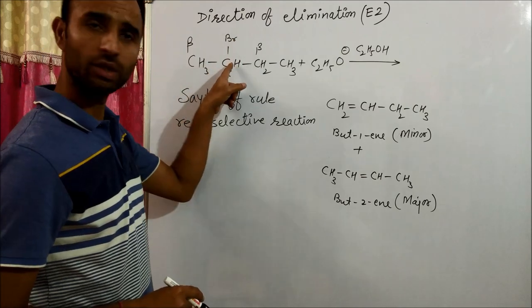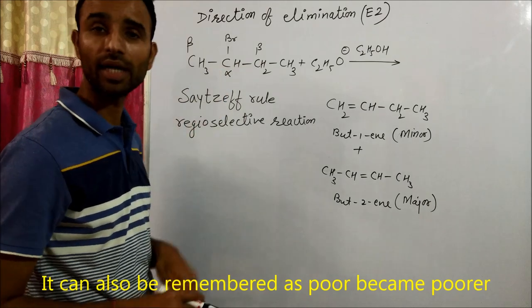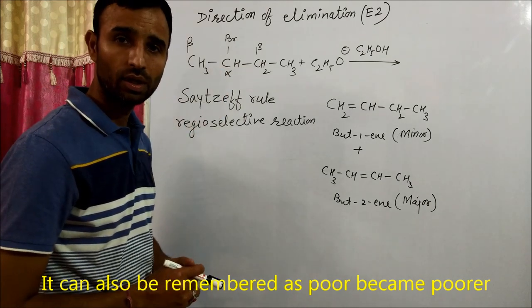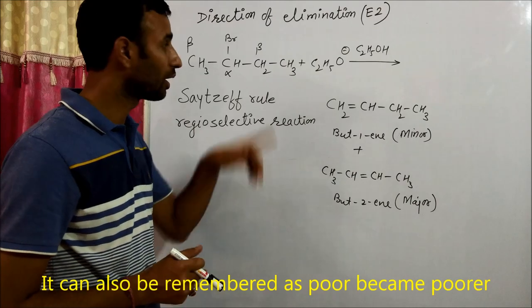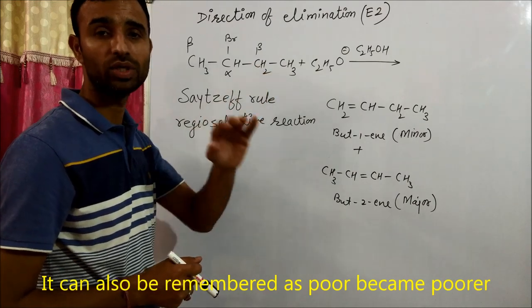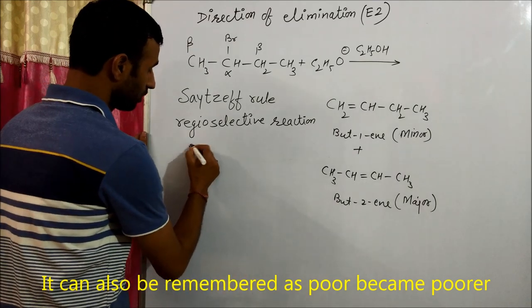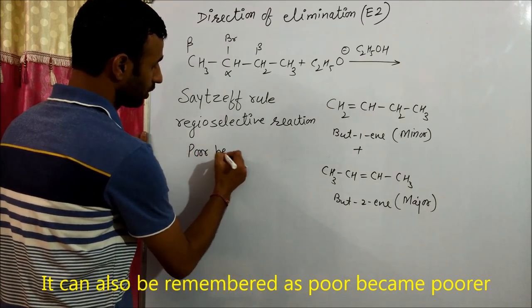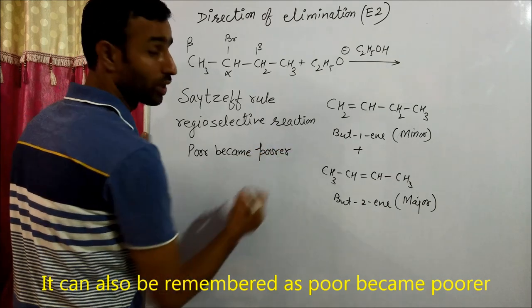So that means E2 reaction is regioselective reaction. One more thing. See, bromine is removed. Now on this side there are three hydrogens, on other side there are two hydrogens. So hydrogen is preferably removed from the side where hydrogens are less. That means it can be remembered as poor became poorer.